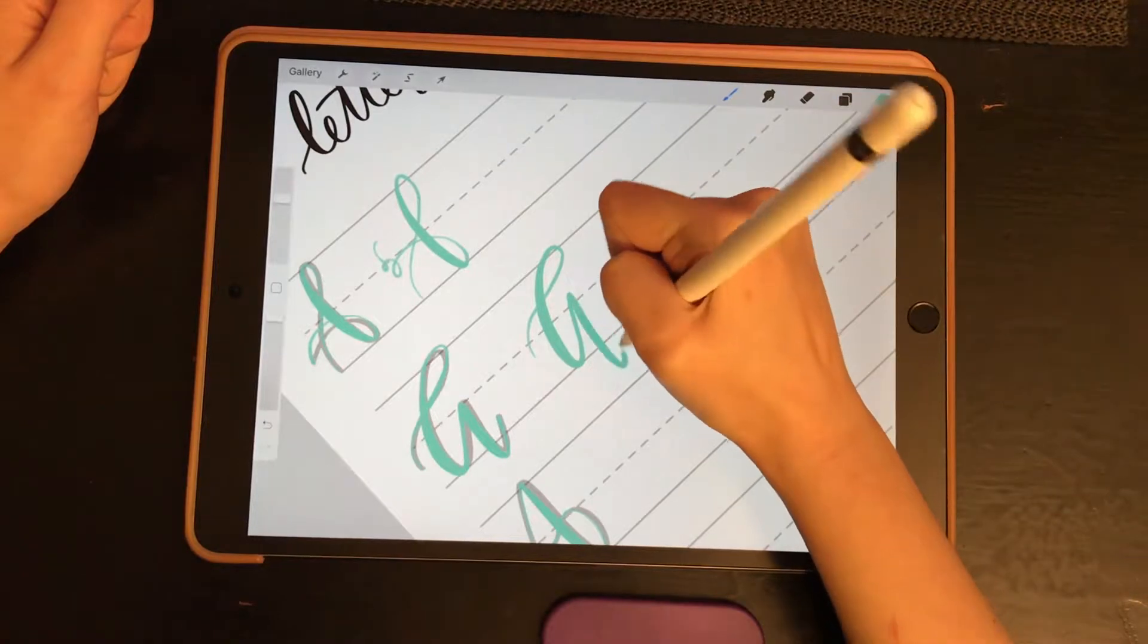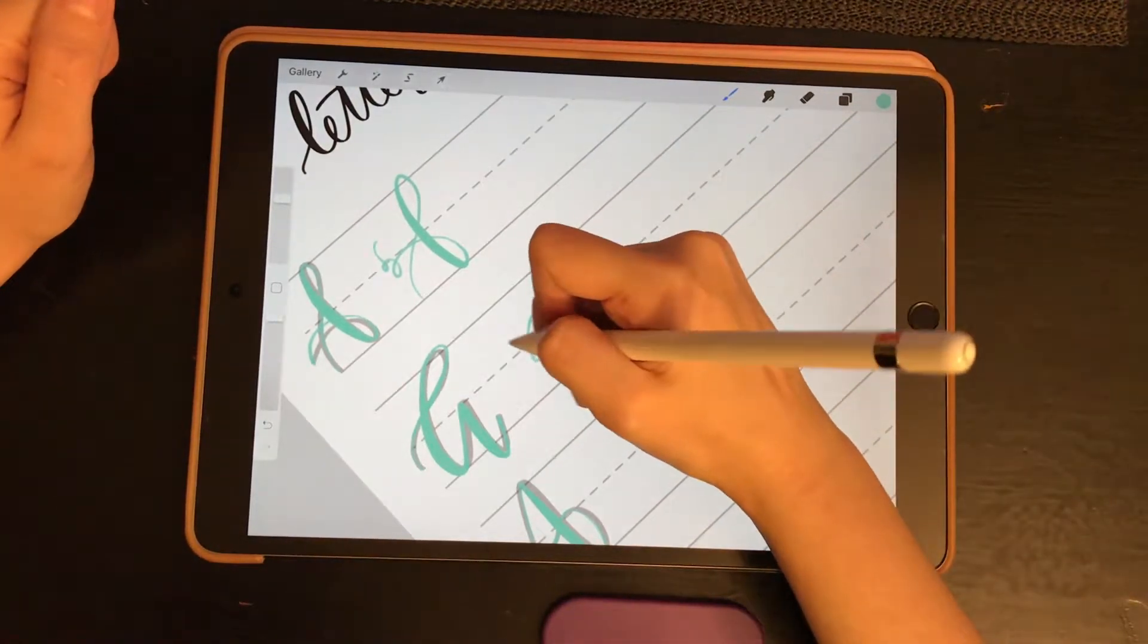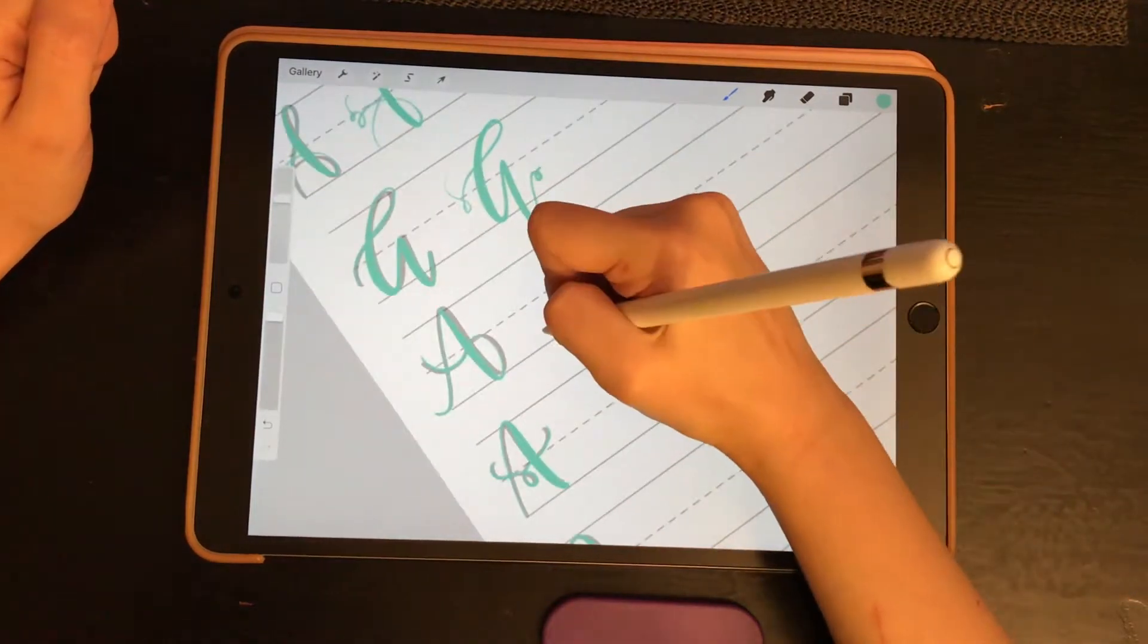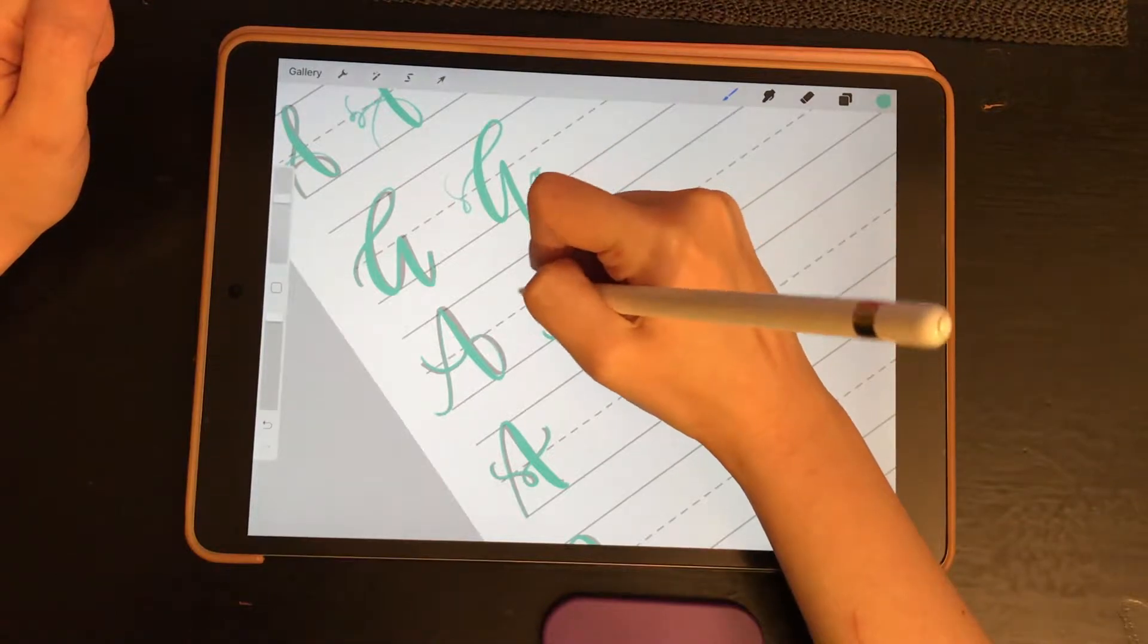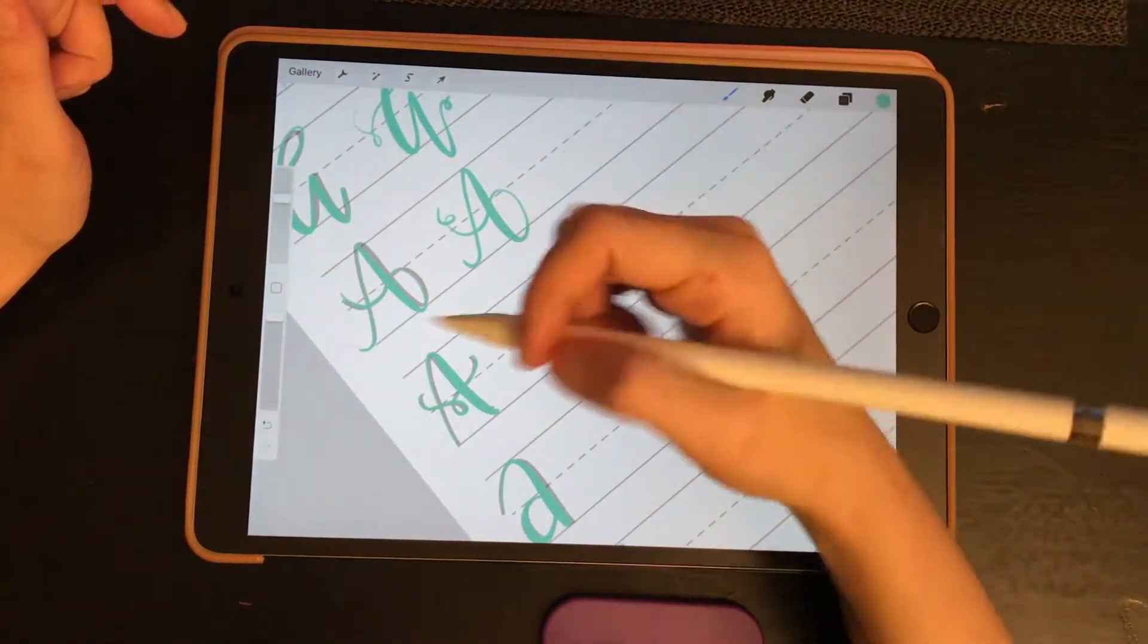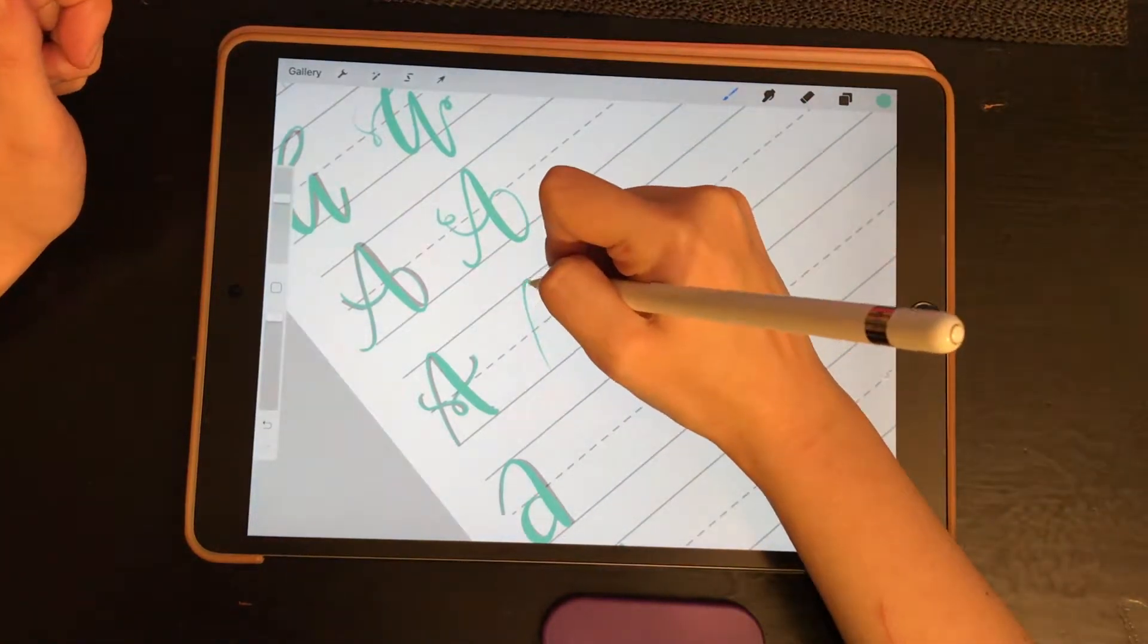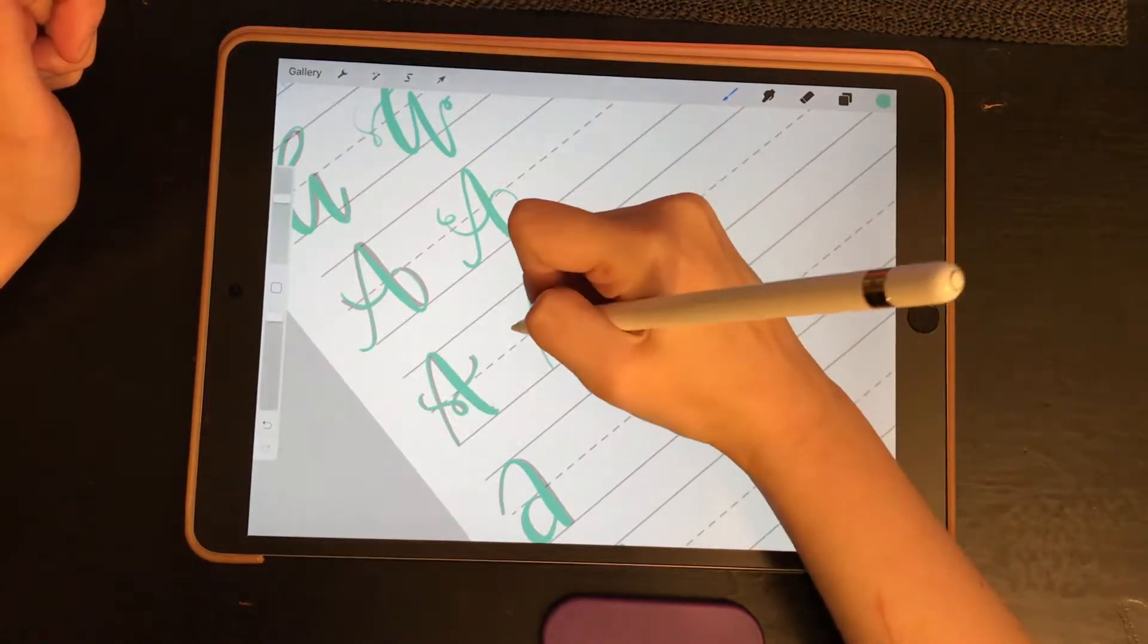You can kind of add some flourishes over here to that one. This one you can kind of take up and add a flourish over here. I mean you kind of want to just make these your own and use this as like a base of getting used to that muscle memory of your lighter upstrokes and your thicker downstrokes.